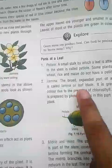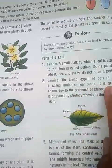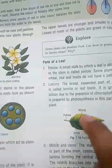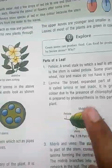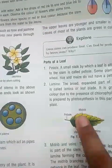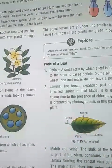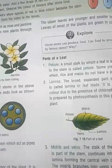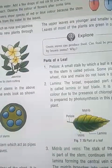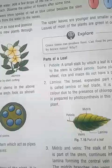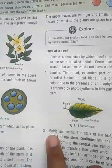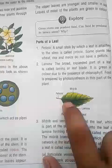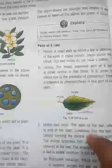Next is the lamina. The lamina is the broad expanded part of the leaf, also called the leaf blade. It is green in color due to the presence of chlorophyll. The green color of the leaves is due to the presence of chlorophyll, which helps in forming food through the process of photosynthesis.